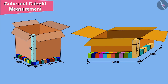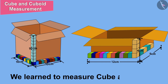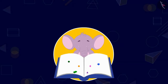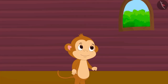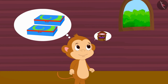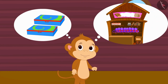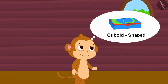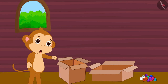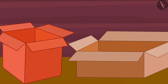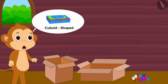Hello kids! In the previous video we learned to measure cube and cuboid. In this video we will learn more about it through some interesting examples. Babban wants to buy compass boxes to sell in his shop. The compass boxes are cuboid shaped. He has brought one cube and one cuboid shaped box with him.